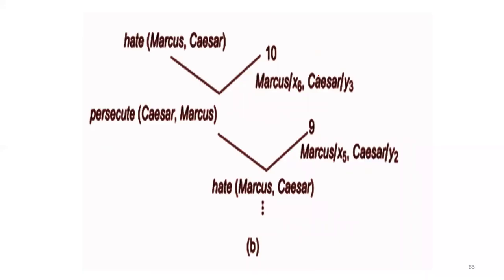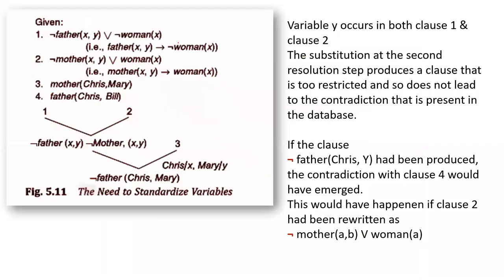Now you have to concentrate on the concept of standardizing variables. What is the need to standardize variables? For example, if you take negation father of x, y and negation woman of x, that is, if a person is a father of x and y, that implies he is not a woman. If he is a father, he will not be a woman. For this, you have to standardize the variable.